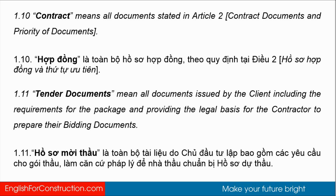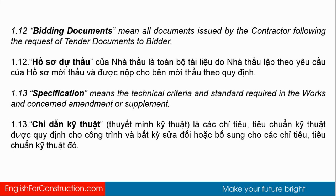1.10 Contract means all documents dated in Article 2: Contract Documents and Priority of Documents. 1.11 Tender Documents mean all documents issued by the client, including the requirements for the package and providing the legal basis for the contractor to prepare their bidding documents. 1.12 Bidding Documents mean all documents issued by the contractor following the request of tender documents. 1.13 Specification means the technical criteria and standards required in the works, and any amendment or supplement.